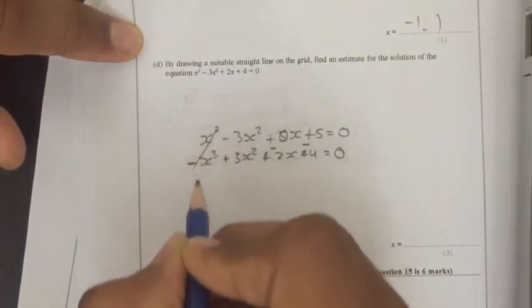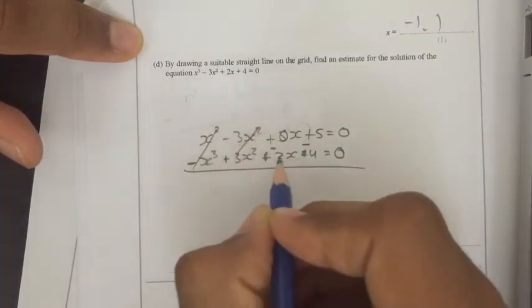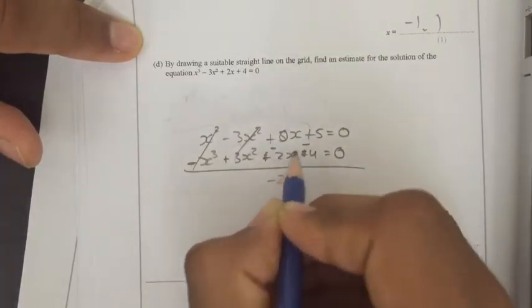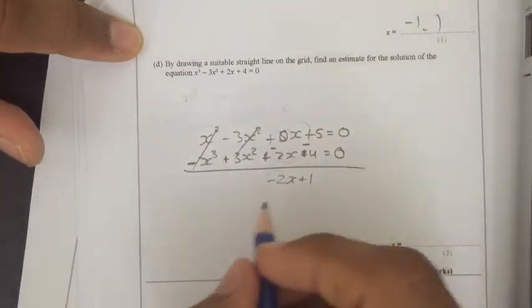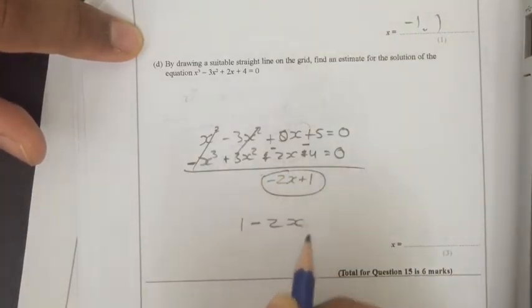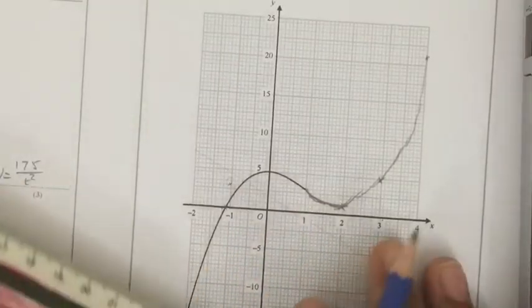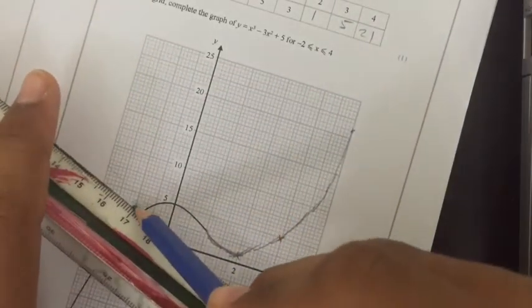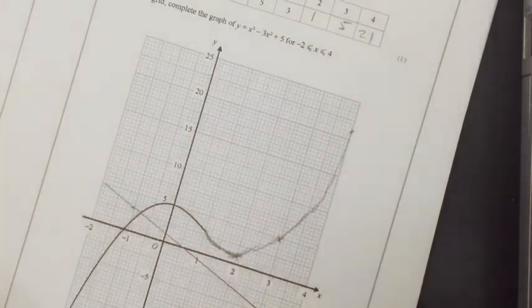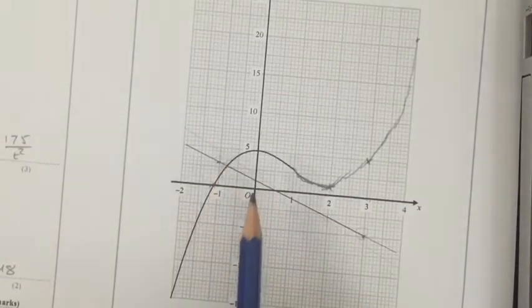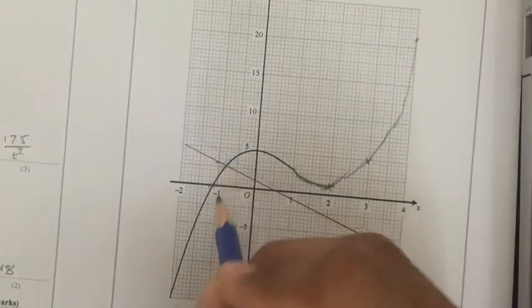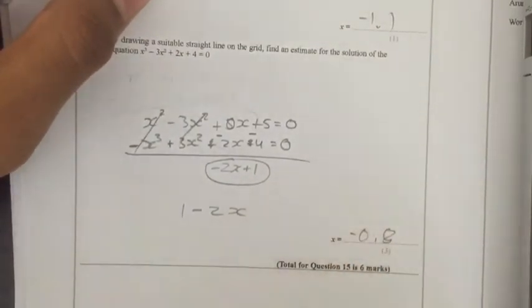So X cubed minus X cubed is 0. Minus 3X squared plus 3X squared is 0. Plus 0X minus 2X is minus 2X. Plus 5 minus 4 is plus 1. So this is a straight line we have to draw, 1 minus 2X. So let's just get the graph out again. Now I have already plotted two points, because that's all you need for a straight line. So let me just draw the line. And now where it crosses, where it crosses the original line, that's minus 0.8.